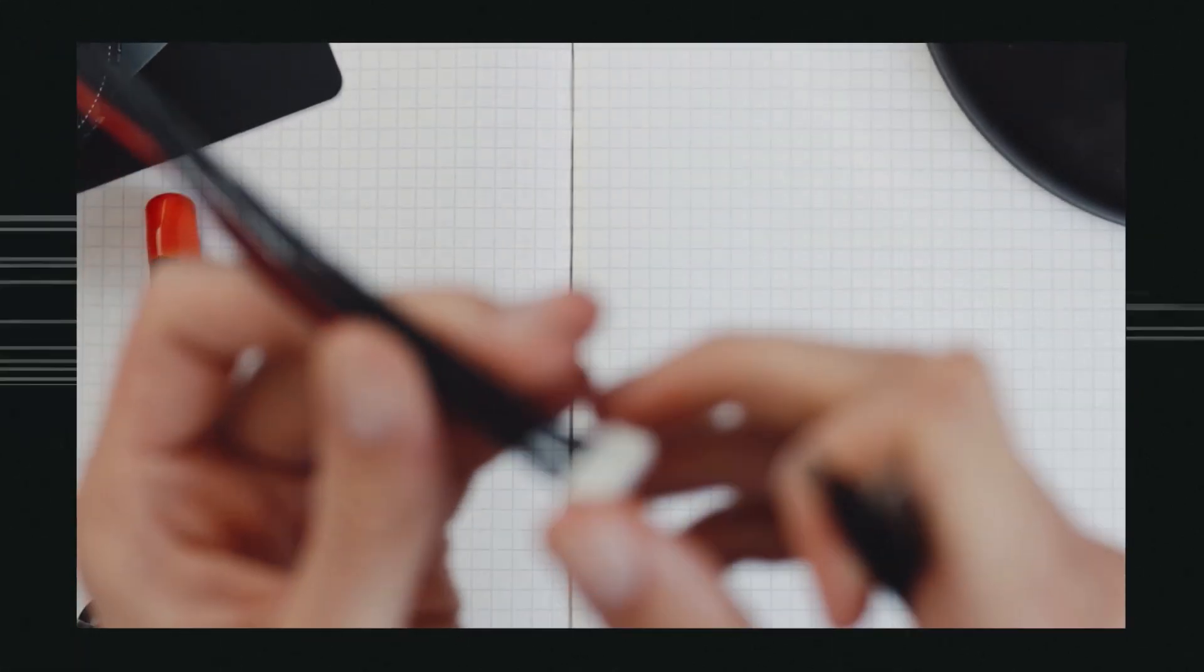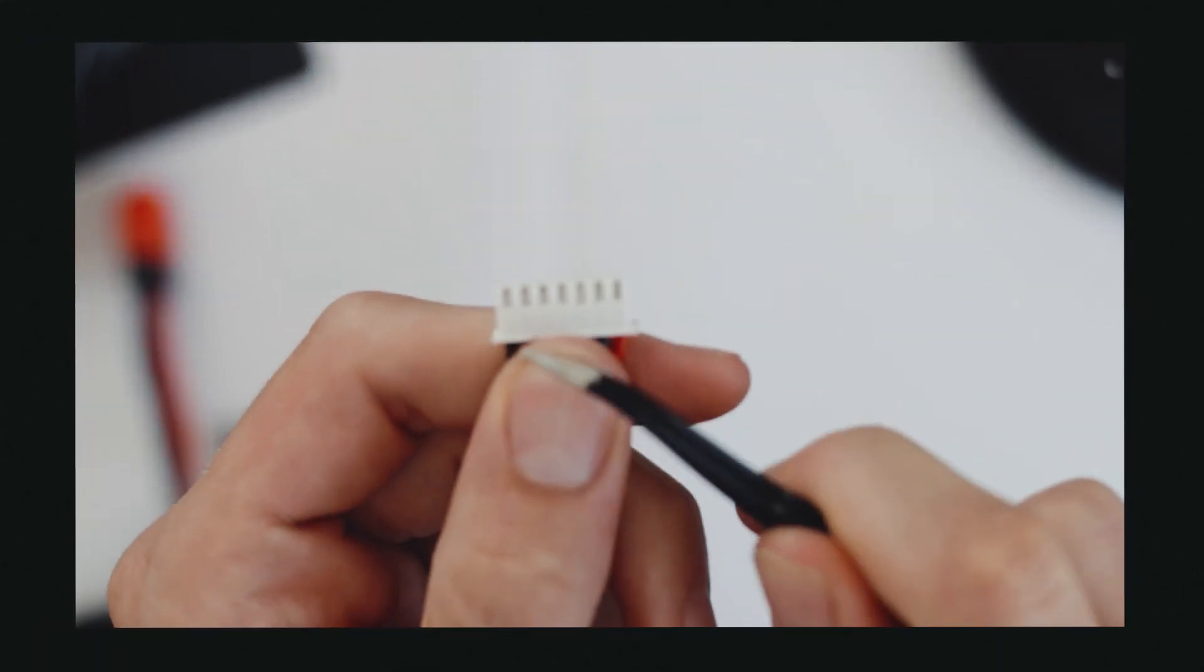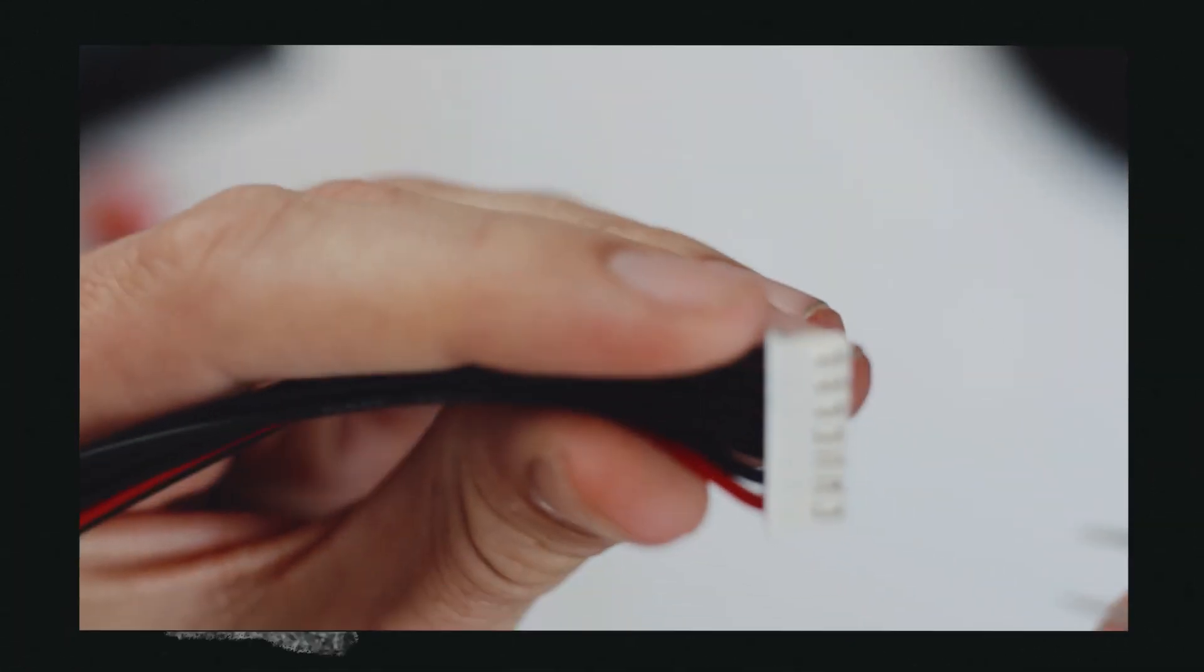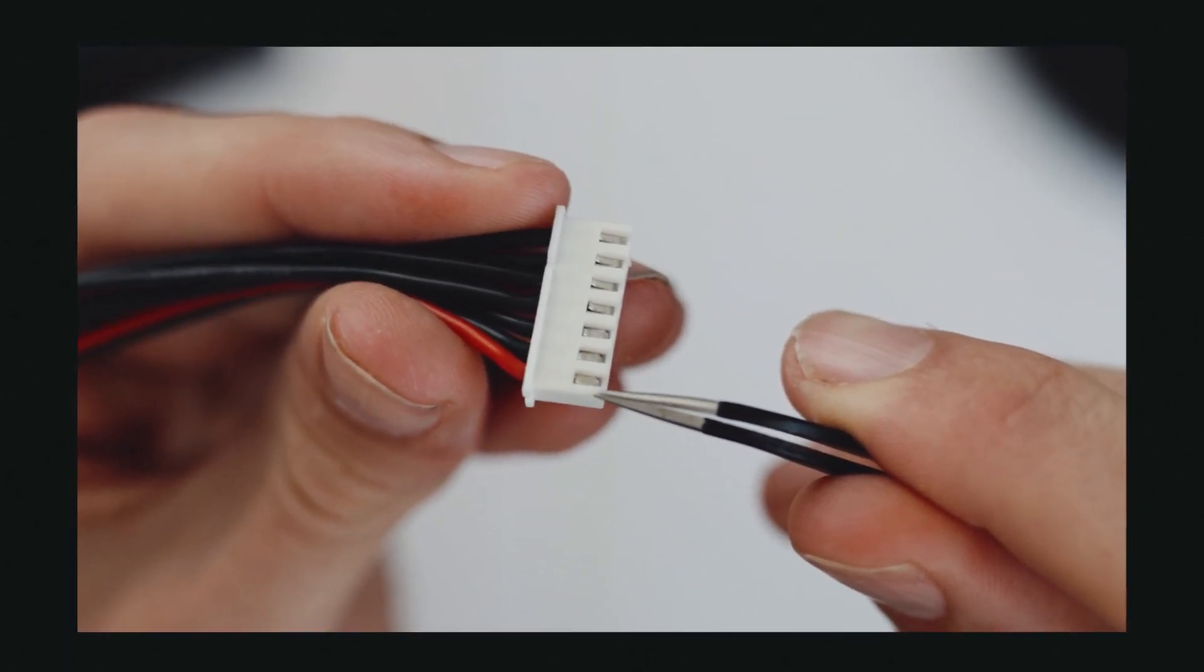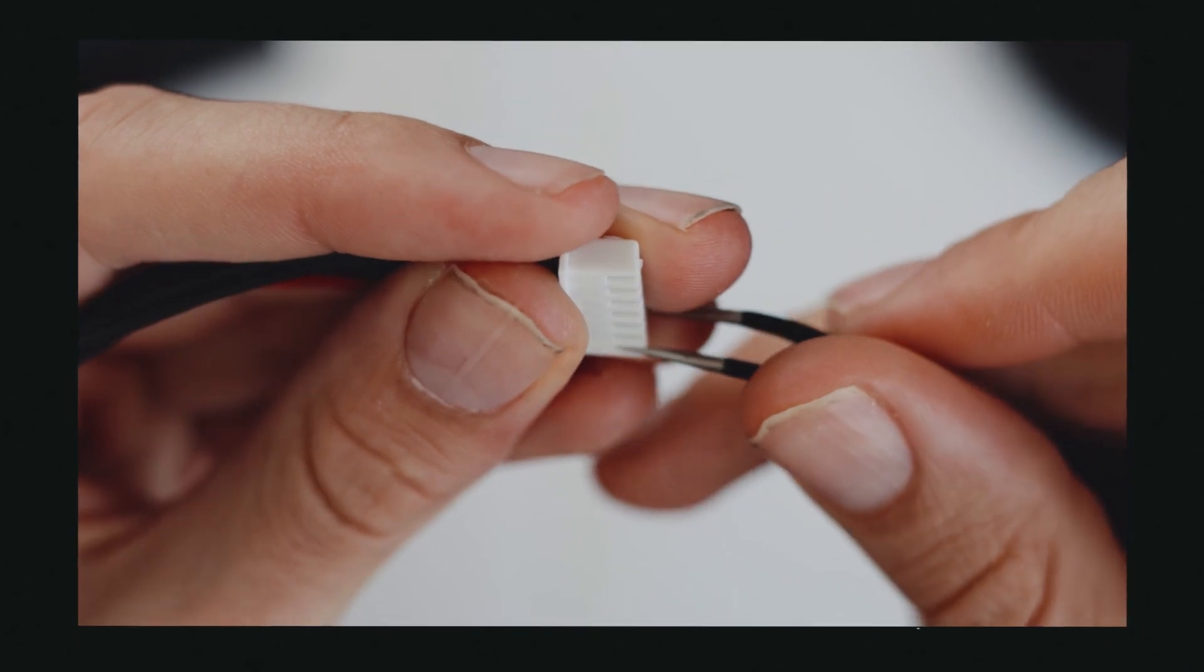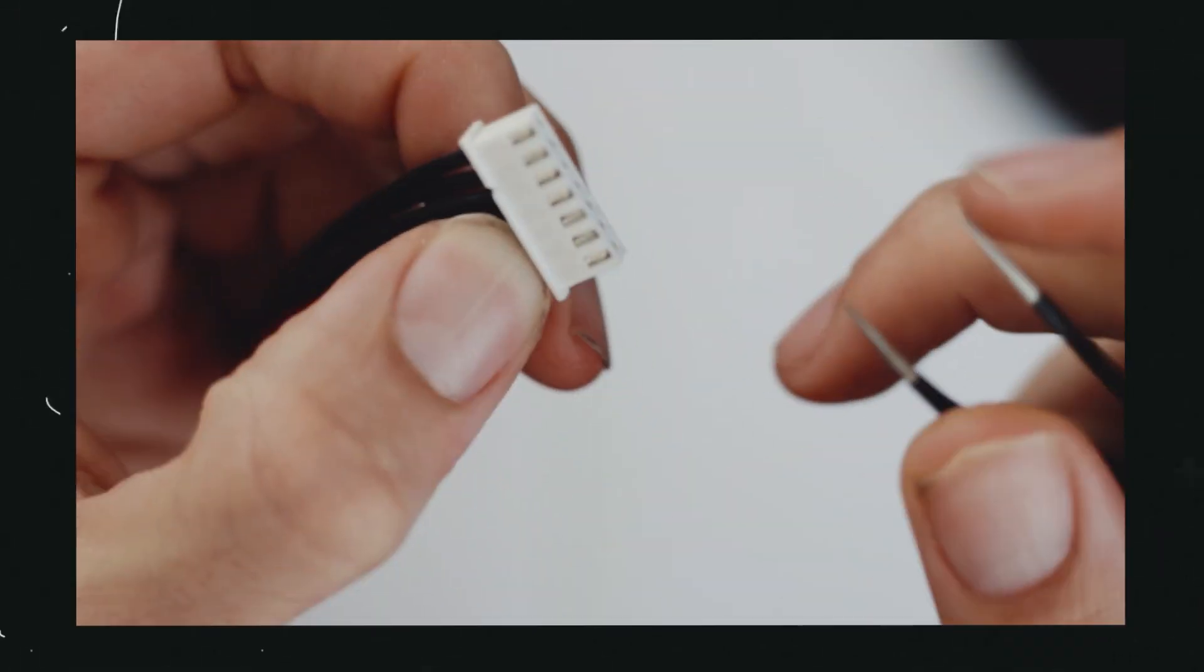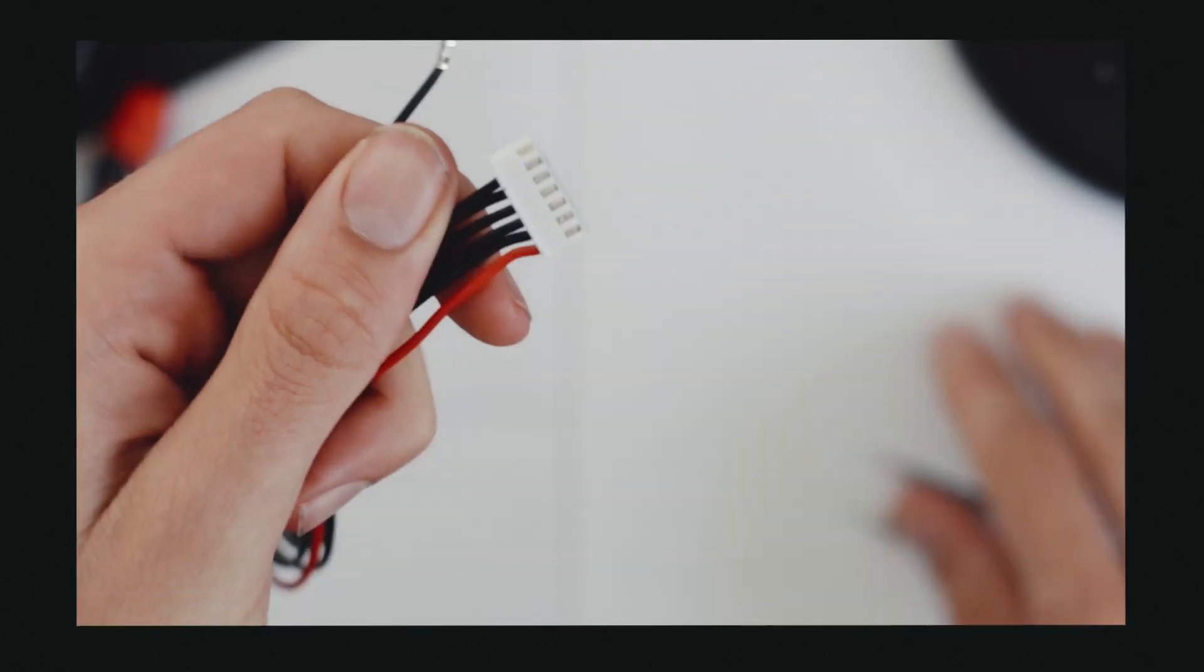The first thing you want to do is get the cables out of this connector, because this is what we want - this connector thing over here. It might be really difficult to show you, but essentially inside here, each of these has their own little clip that pops out. What you need to do is push the clip down at the same time as pulling the cable.